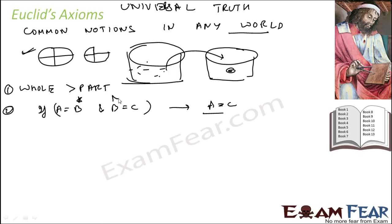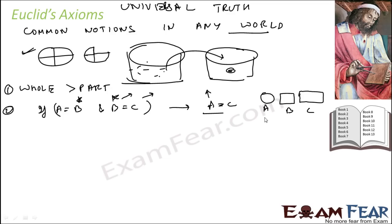So if both a and c are equal to b, that means a and c are equal to each other — and a, b, c can be anything. For example, if a is the area of a circle, b is the area of a square, and c is the area of a rectangle. If the area of a circle equals the area of a square, and the area of a square equals the area of a rectangle, then the area of the circle also equals the area of the rectangle. This concept applies in any discipline, and that's why it is an axiom.